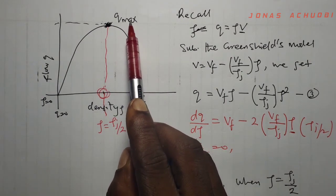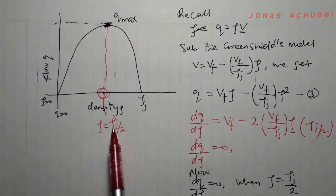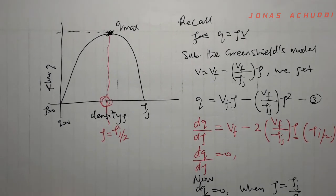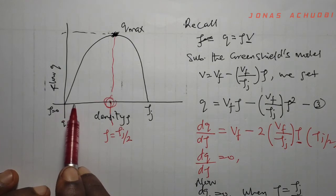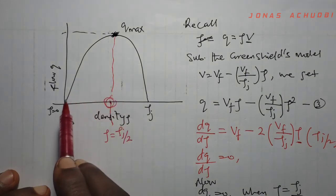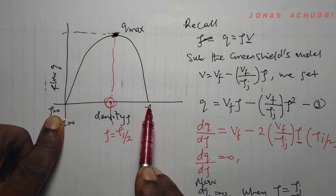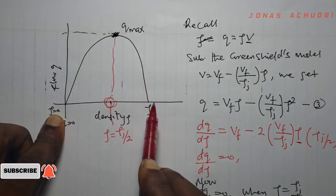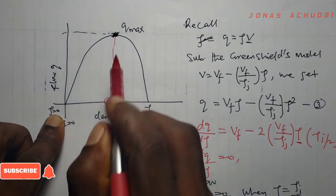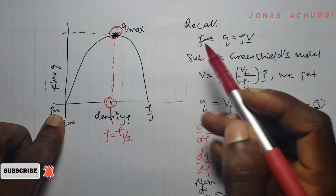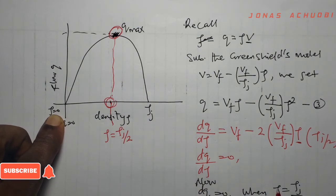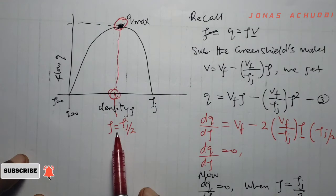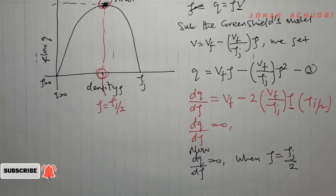We conclude that the flow rate Q is maximum when the density ρ equals half of the jam density. This makes practical sense: at zero density, flow rate is also zero. As density increases, flow rate increases. But as density continues increasing toward jam density — meaning more vehicles on the road — the flow rate eventually begins to reduce. Therefore, there must be a point where flow rate is maximum, and that occurs at ρ = ρJ/2.